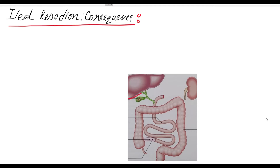This is your liver, this is the gallbladder, and this is the duodenum. This is the jejunum, and this portion is the ileum, and this is the large gut — ascending colon, transverse colon, descending colon, and this is the rectum.